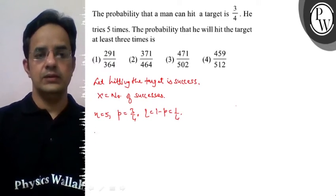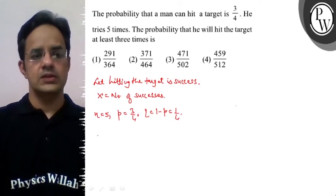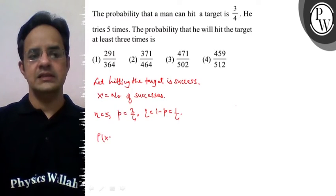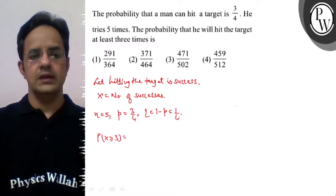We have to calculate at least 3 times we have success. The probability of at least 3 times means P(X ≥ 3).